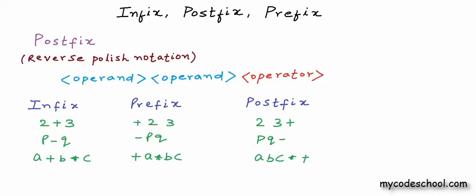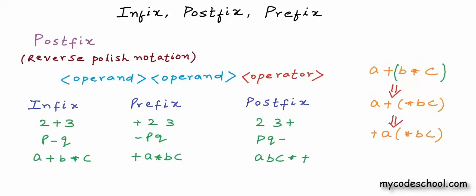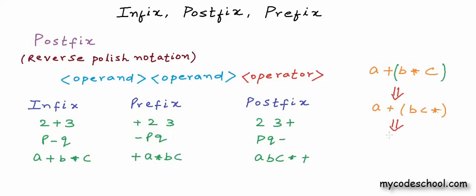We will see efficient algorithms to convert infix to prefix or postfix in later lessons. For now, let's see how we can do this manually. To convert an expression from infix to either of the other two forms, we go step by step just as we would in evaluation — following the order of precedence and putting in implicit parentheses. For the expression a plus b times c in infix, we first convert the multiplication part b times c to prefix, then bring the addition operator to the front. For postfix, we first convert the multiplication, then the addition, and finally remove all parentheses.